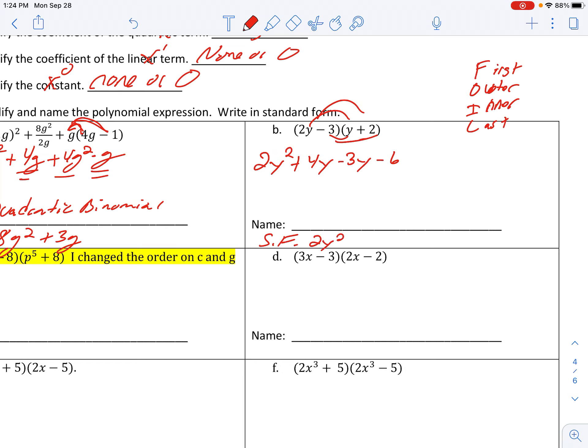Put it into standard form then. 2y squared. Linear terms combined to give you 1y minus 6. And this is a quadratic trinomial.